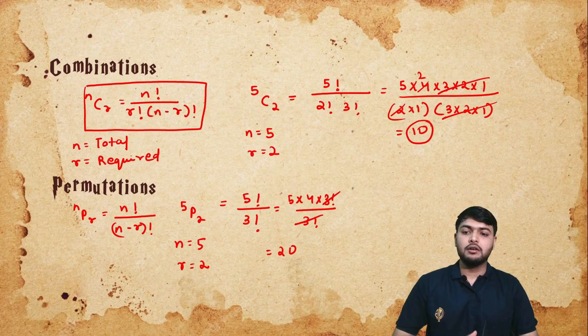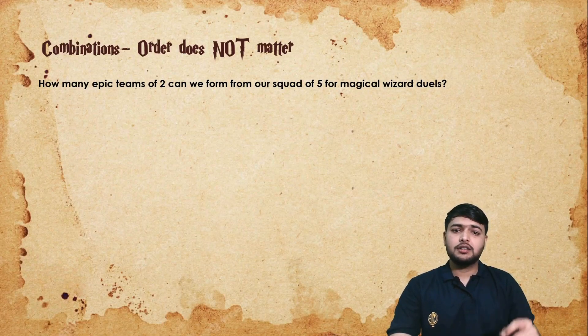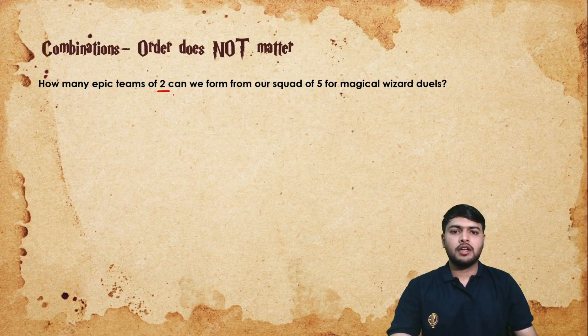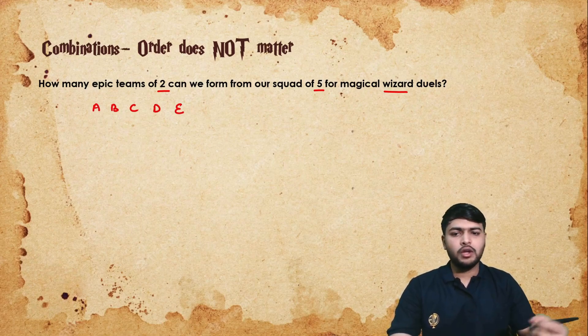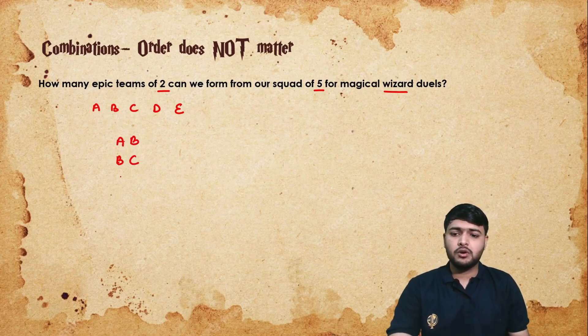Now that we have noted the formulas, let's move on to the concepts. Consider this question: how many epic teams of 2 can we make from a squad of 5 wizards? Let's say the 5 wizards are A, B, C, D, E. You can have teams AB, BC, CD, or BA.